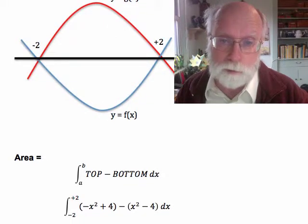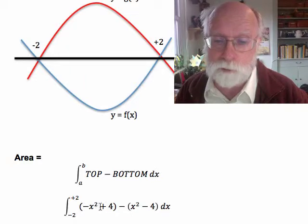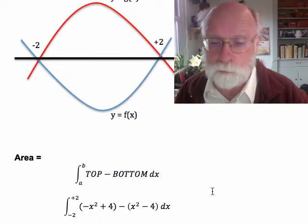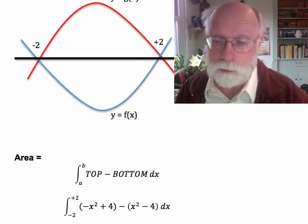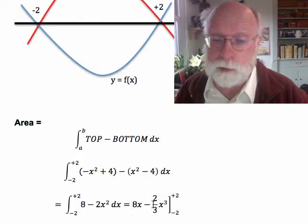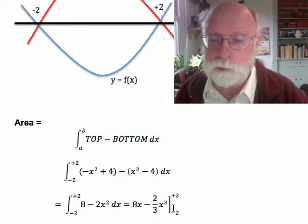So in our particular case, we get the integral between minus 2 and plus 2 of g, which was minus x squared plus 4, minus f, which is x squared minus 4. If we do some algebra on that, we get 8 minus 2x squared. Anti-derivatives are 8x and minus 2 thirds x cubed. And we evaluate that anti-derivative at plus 2 and subtract the value at minus 2.